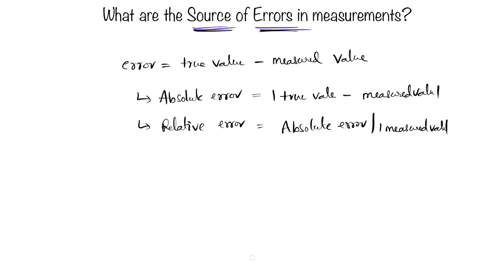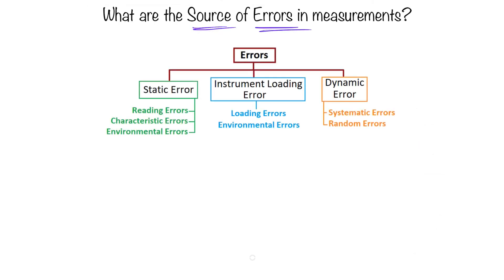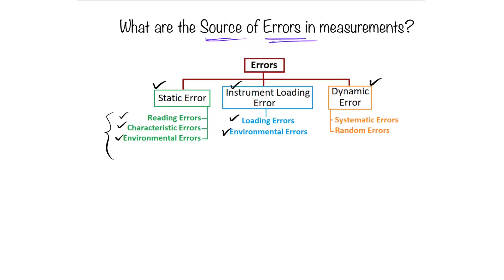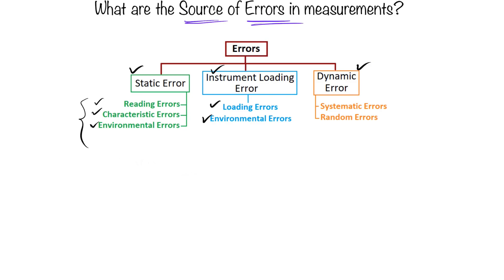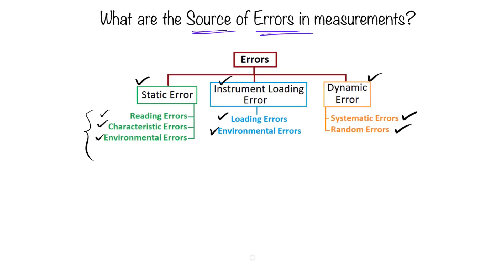Now let's look at a tree diagram of the different sources of errors. There are three main sources: static error, instrument loading error, and dynamic error. Under static error we have three sub-types: reading error, characteristic error, and environmental error. Under instrument loading errors we have two types: loading errors and environmental errors. Under dynamic errors we have systematic errors and random errors.